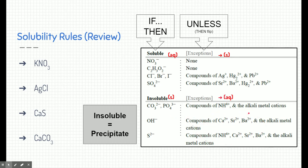One thing to note: many periodic tables list alkali metal cations as exceptions. Remember, alkali metals are the first column — lithium, sodium, potassium, rubidium, cesium, and francium. You might consider writing those in instead of 'alkali metal cations' if they're not already listed.